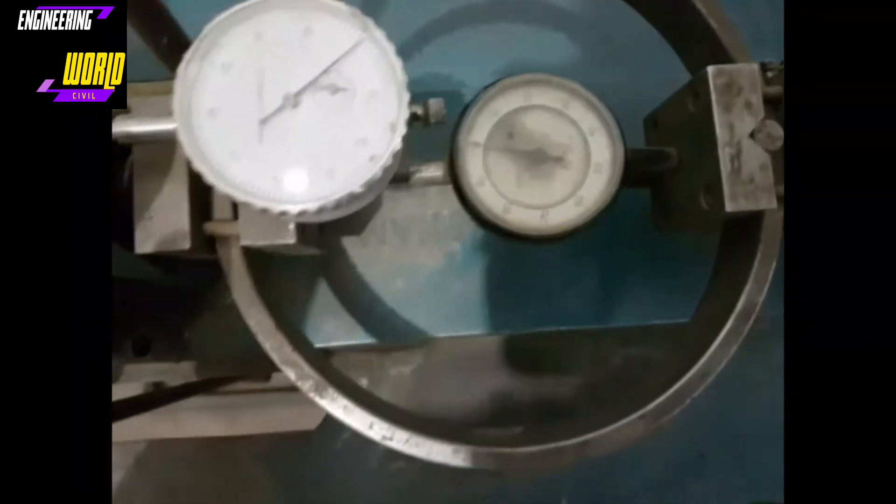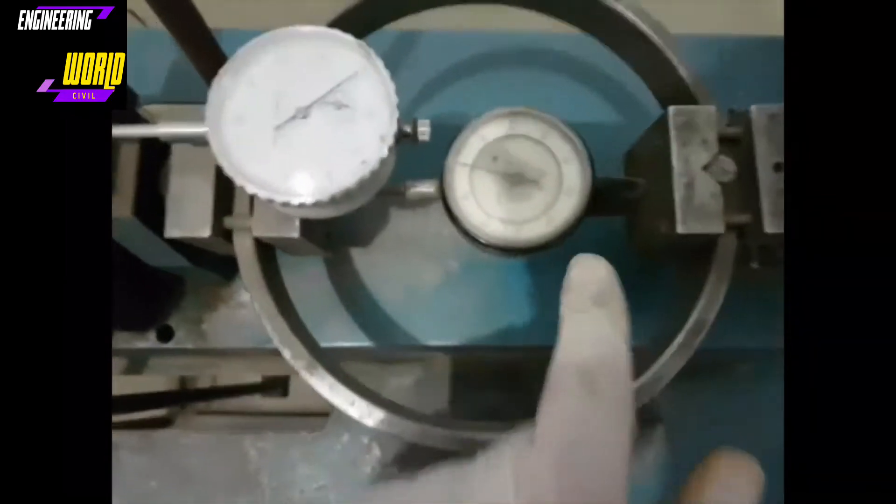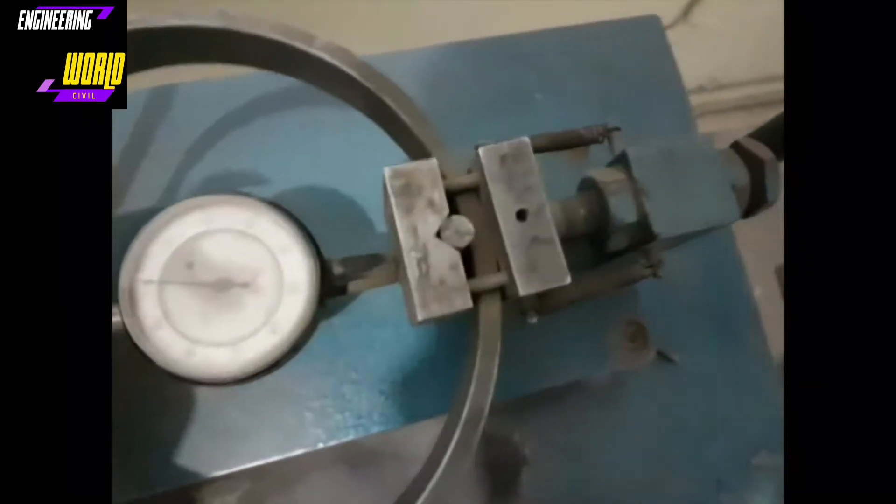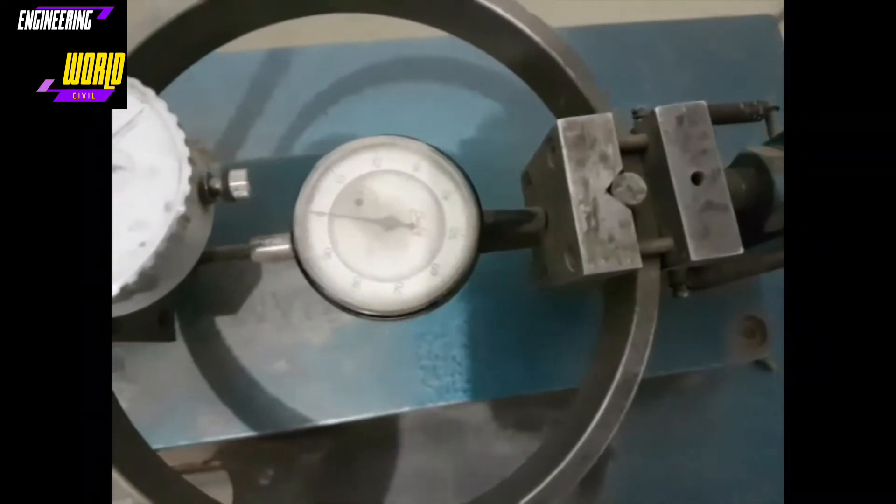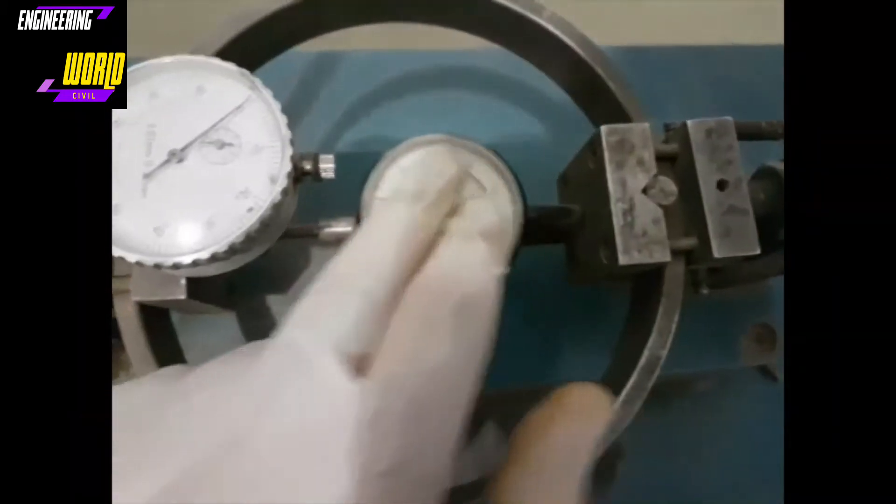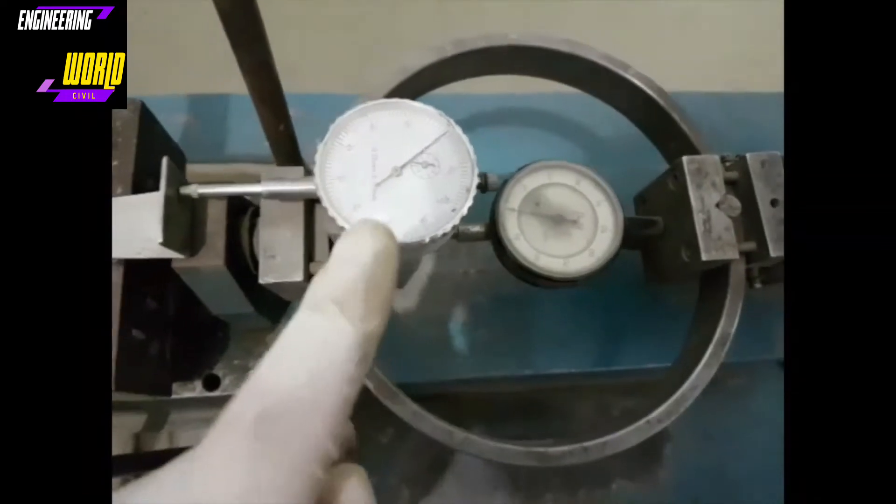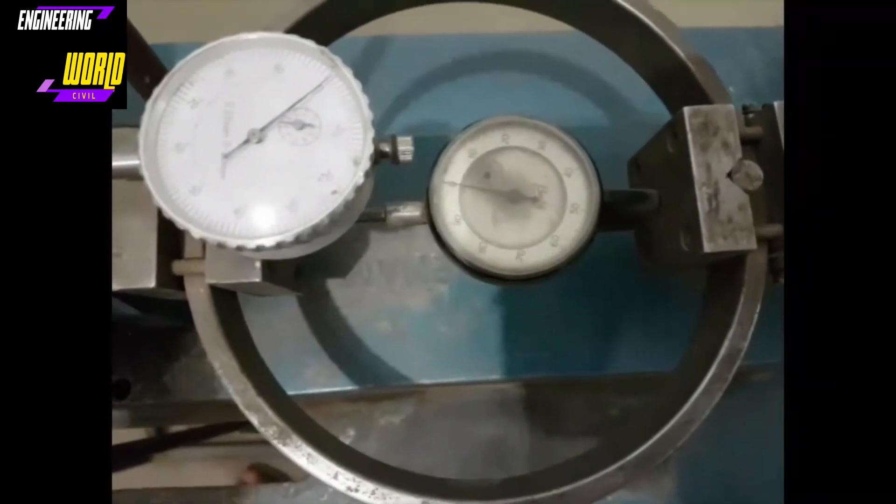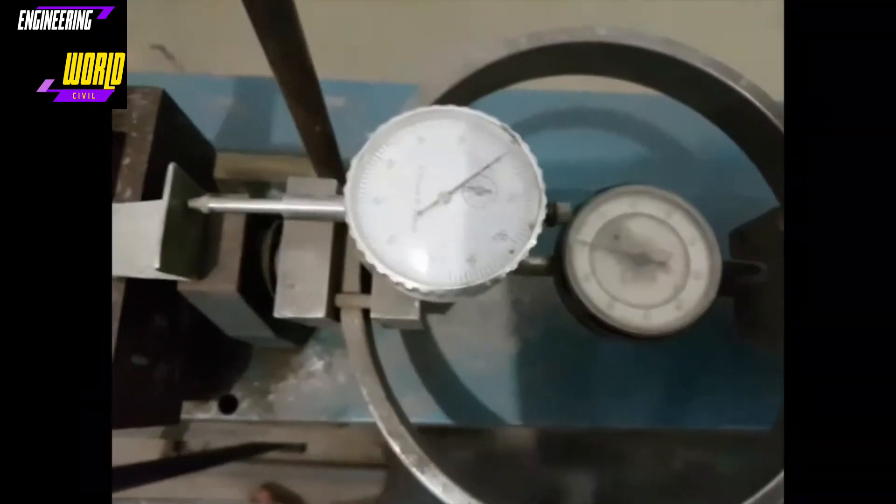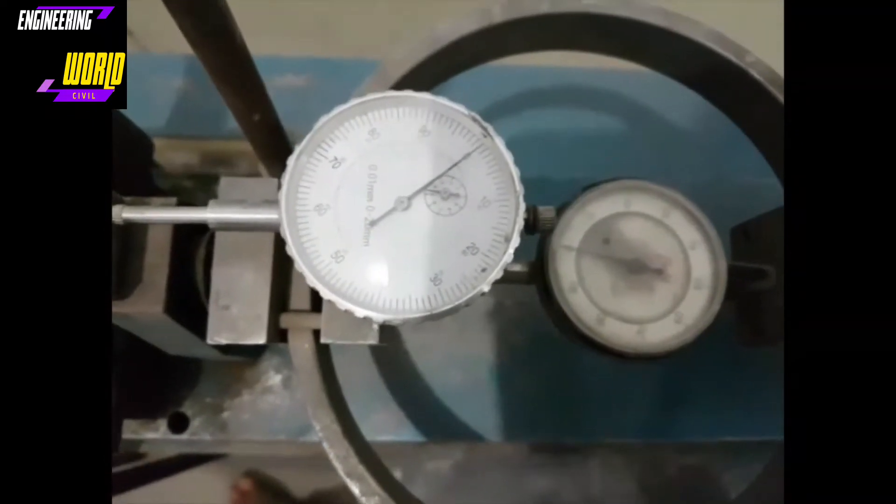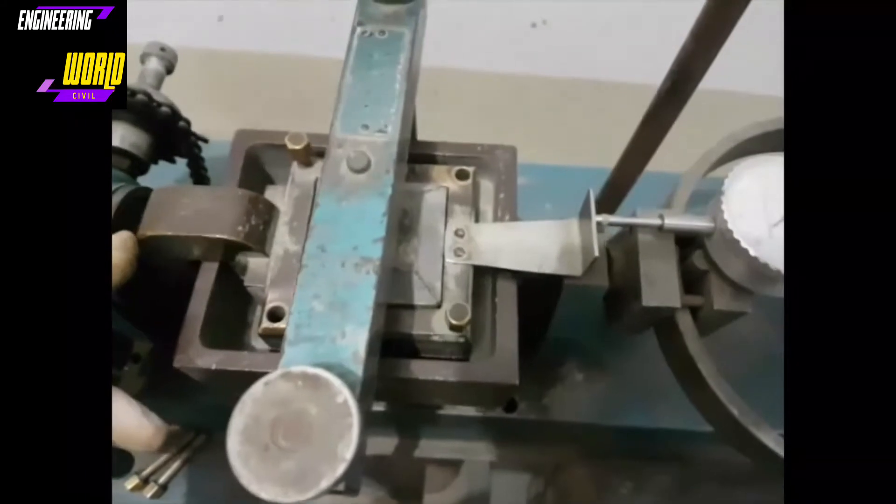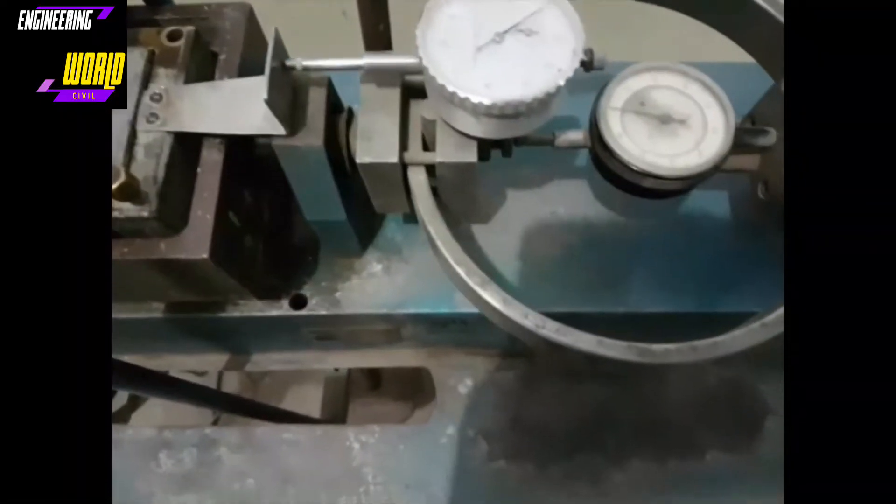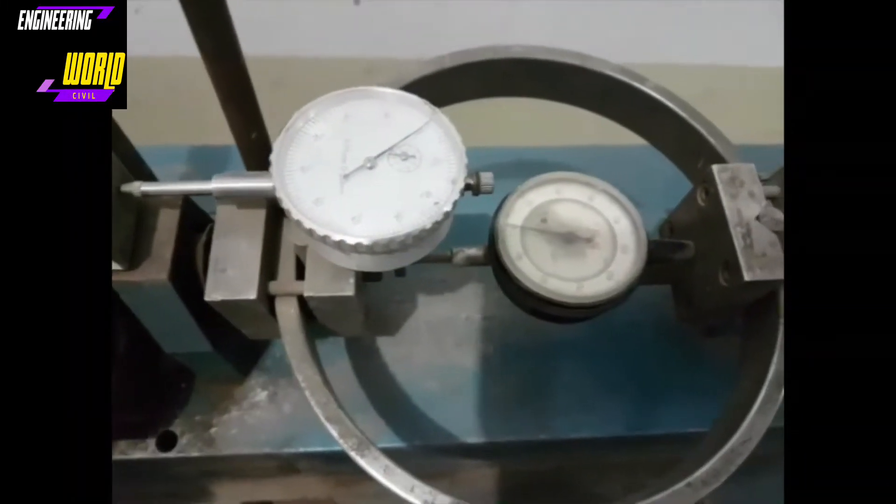At 10, 20, 30, 40, and so on, we will note down the corresponding load values. We will keep on doing this until either the value becomes constant on the load dial gauge for three respective readings, or until the load gauge starts moving backwards, or unless the deflection dial gauge reaches 15 percent strain. Now 15 percent strain means that considering that this area is 6 centimeters by 6 centimeters, or 60 millimeters, is 9 millimeters. So once this shear box has been pushed 9 millimeters forward, if the load value is still increasing, we will end the experiment there.